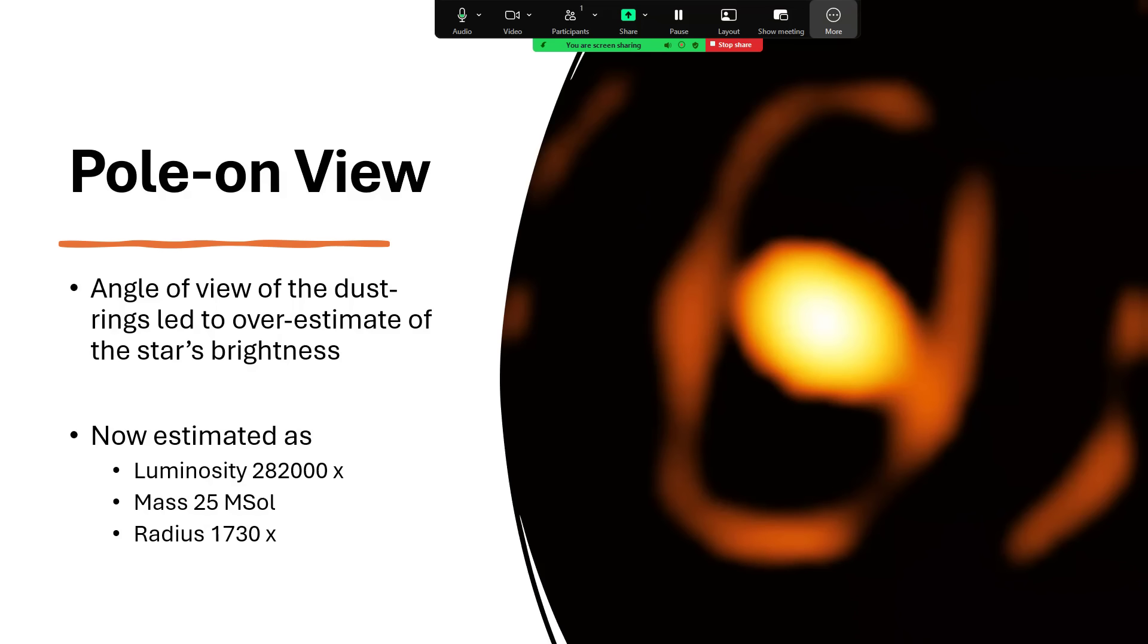But that's also responsible for the fact that we were actually overestimating the star's brightness a little bit, because we were adding in the light coming from the disks of dust as well, in particular, that central oval. So it's been downclassed a little bit to 282,000 times as bright as our sun, and having a mass of only 25, not 40, solar masses with a radius of 1730 times the mass of the sun.